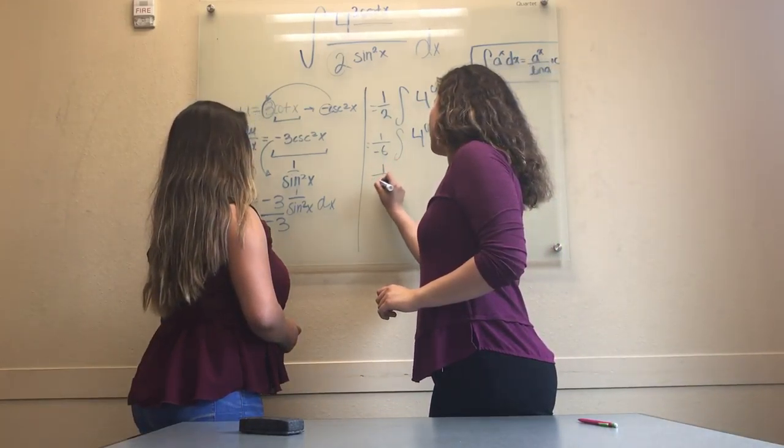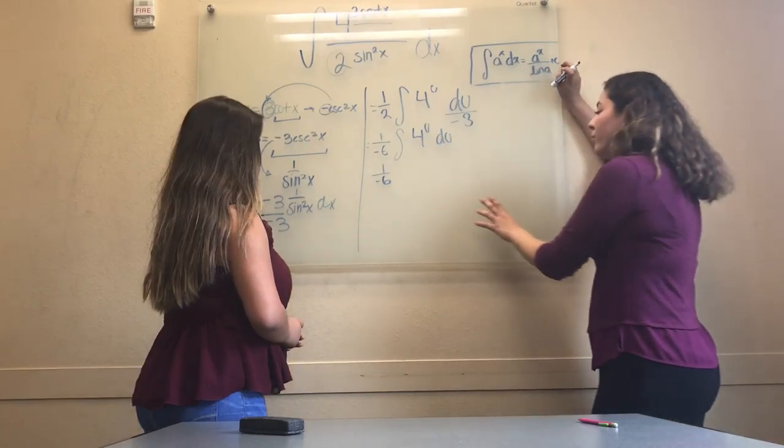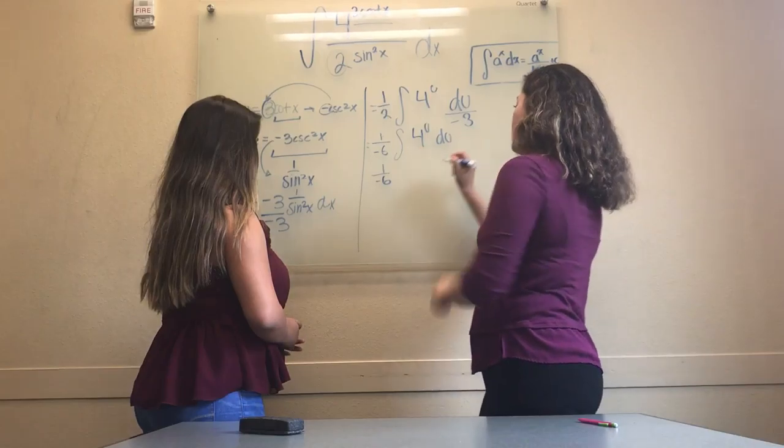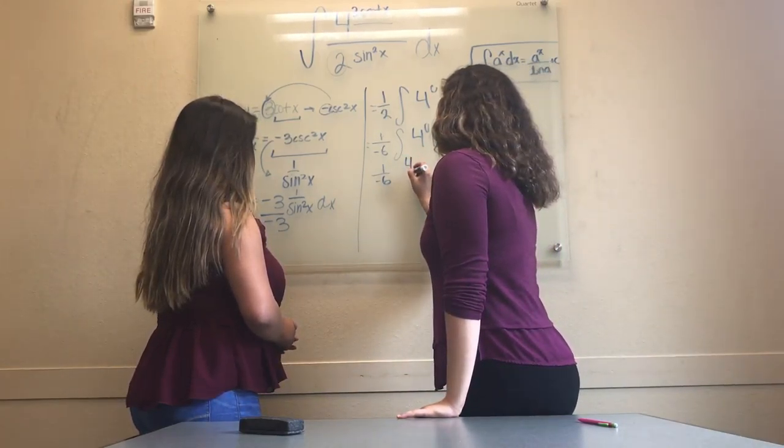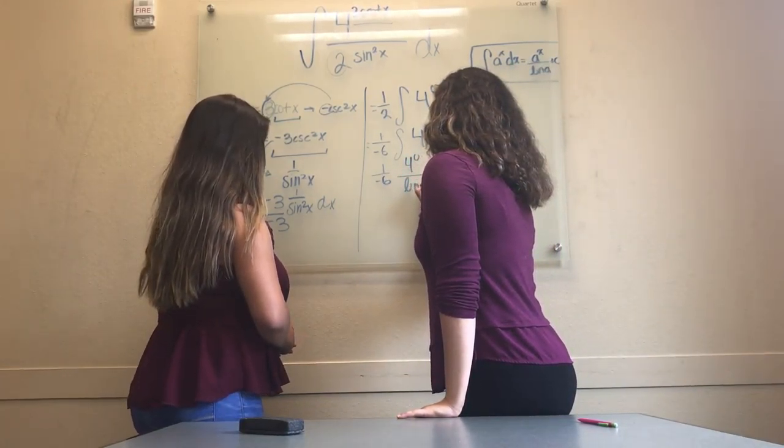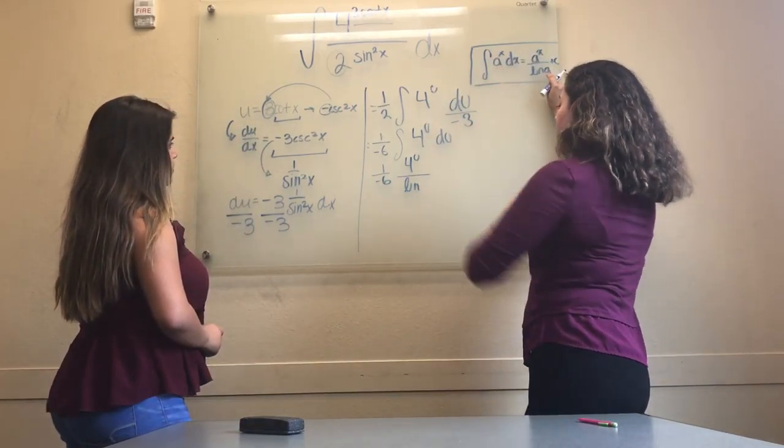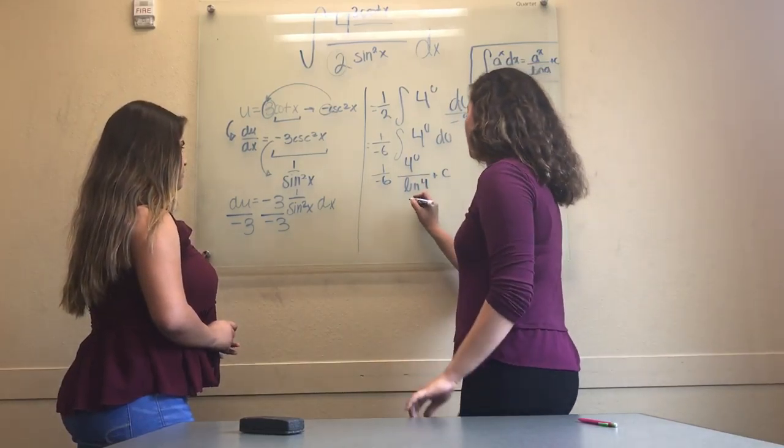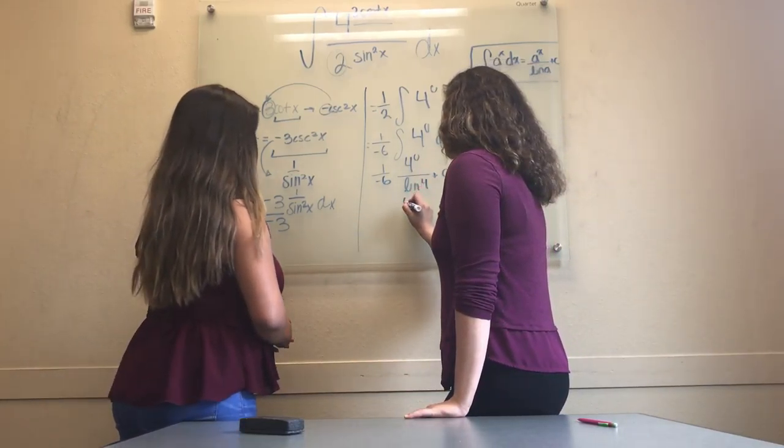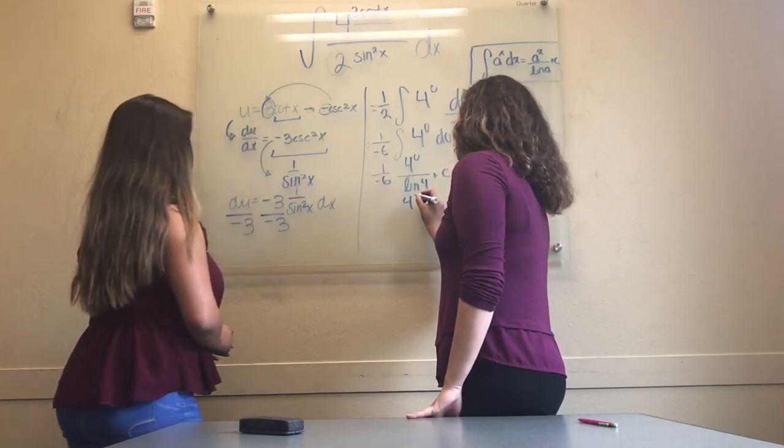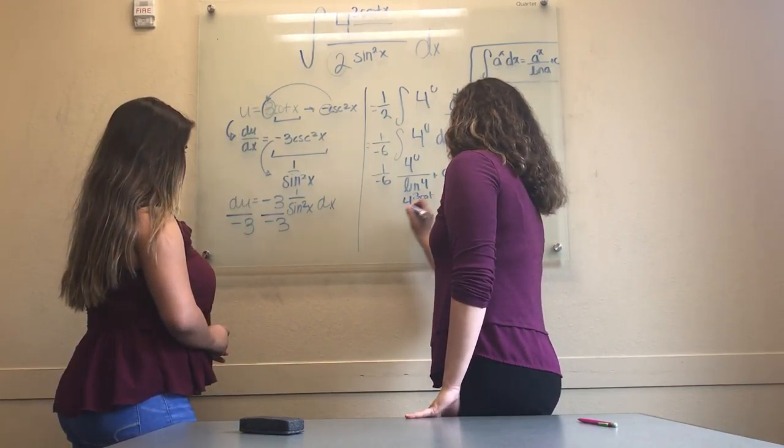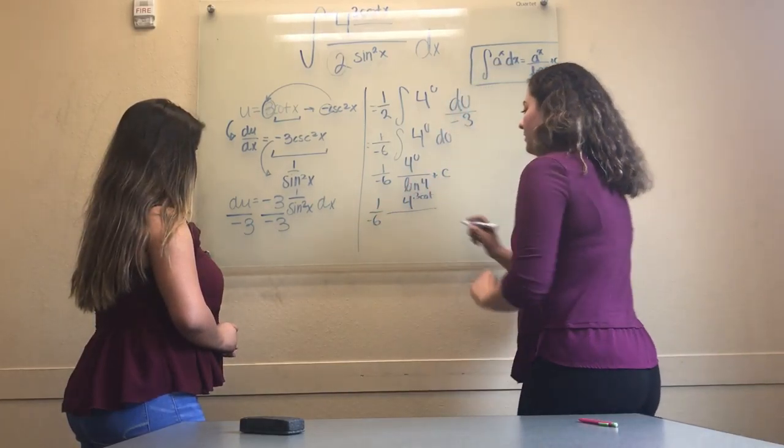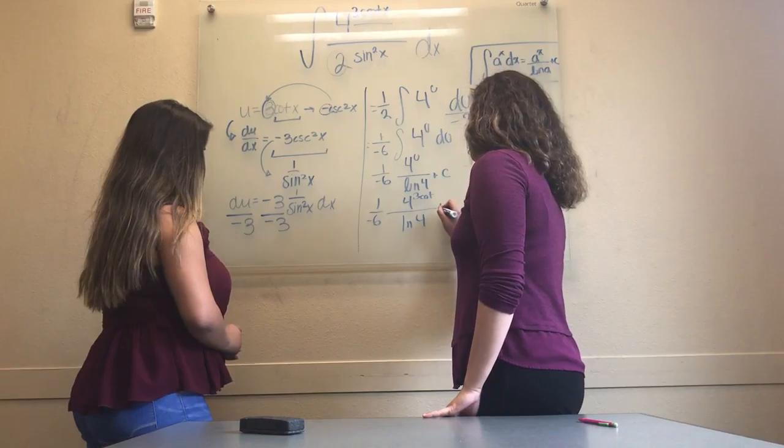So we put 1 over negative 6. When we plug in this function, we will get rid of the antiderivative and the du. So it will be 4 to the u over ln of 4, which is a, plus c. Now we can plug in for u its actual meaning, that it is 3 cot x divided by ln of 4 plus c.